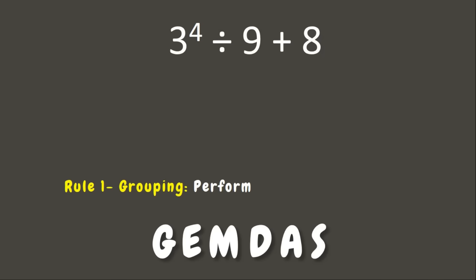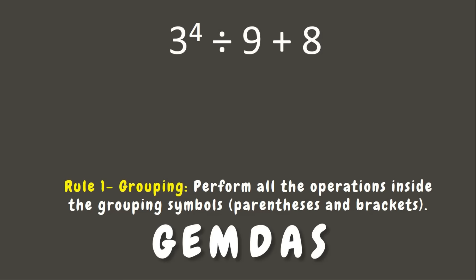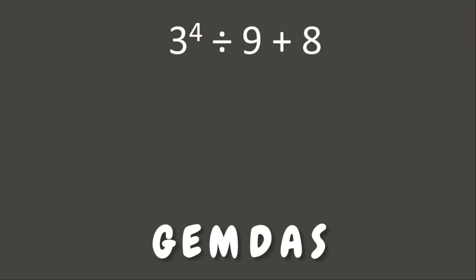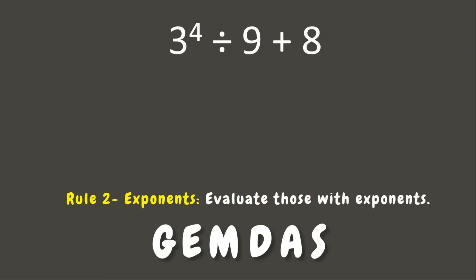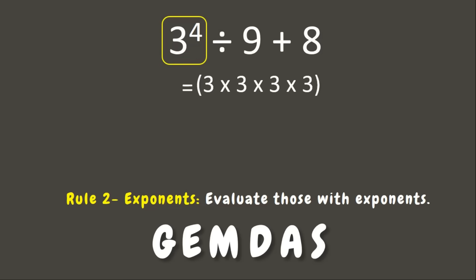First, let's take a look for grouping symbols. Can you see one? That's right — there are no grouping symbols, so let's proceed to the next rule: the letter E, or Exponents. Let's look for numbers with exponents. We have 3 to the fourth power. Let us evaluate: 3 times 3 times 3 times 3, and the value is 81. Good job!